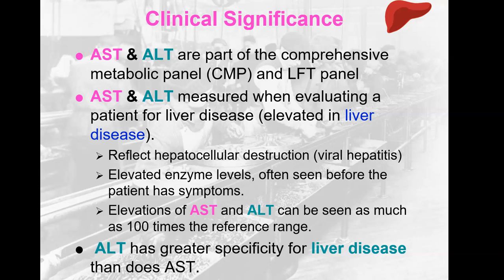Elevations of AST and ALT together, especially with other liver findings, can reflect hepatocellular destruction. They are located intracellularly in liver cells — the hepatocytes — so a sharp increase in both indicates those cells are being destroyed. This is very typical of viral hepatitis, but also toxic hepatitis or autoimmune hepatitis. Elevated enzyme levels can often be seen before the patient has symptoms, which is why these tests are useful. Elevations can be as much as a hundred times the upper limit of the reference range — in acute viral hepatitis they can go into the thousands pretty quickly.